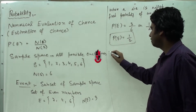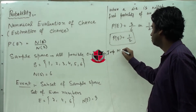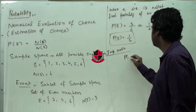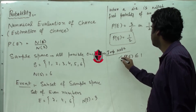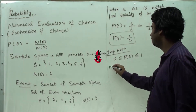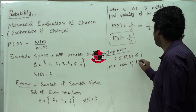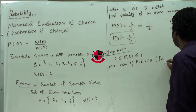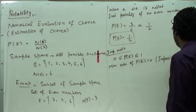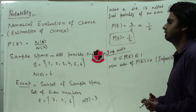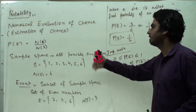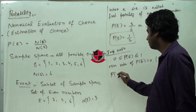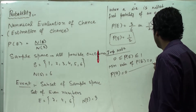Very important thing I want to tell you — an important note. The value of probability of an event lies between 0 and 1. The minimum value is 0, which is known as an impossible event. If the probability of an event comes to 0, we can say that it is an impossible event. For example, if a die is rolled, what is the probability of getting a 7? That probability is 0, which is an impossible event.